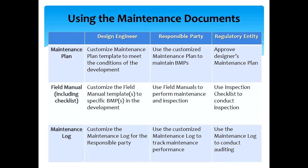The next column shows how the responsible party follows and tracks the actions identified in the maintenance plan and the field manuals to ensure proper maintenance is performed. The responsible party shall keep all maintenance-related records in the maintenance log. The regulatory entity, such as municipalities and state agencies, can use the maintenance guidance as a tool to facilitate the supervision of the responsible party's maintenance of stormwater BMPs. The regulatory entity may use the maintenance plan template to facilitate its review and use the inspection checklist in the field manuals as a template to make its own inspection checklist. The responsible party's maintenance logs can be used by the regulatory entity as a basis for auditing the responsible party's maintenance performance.